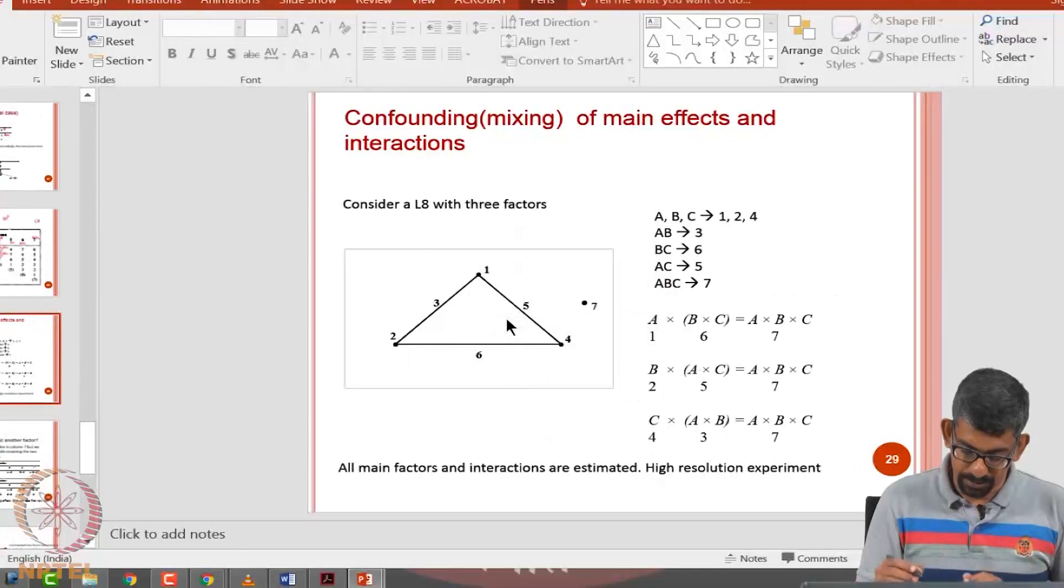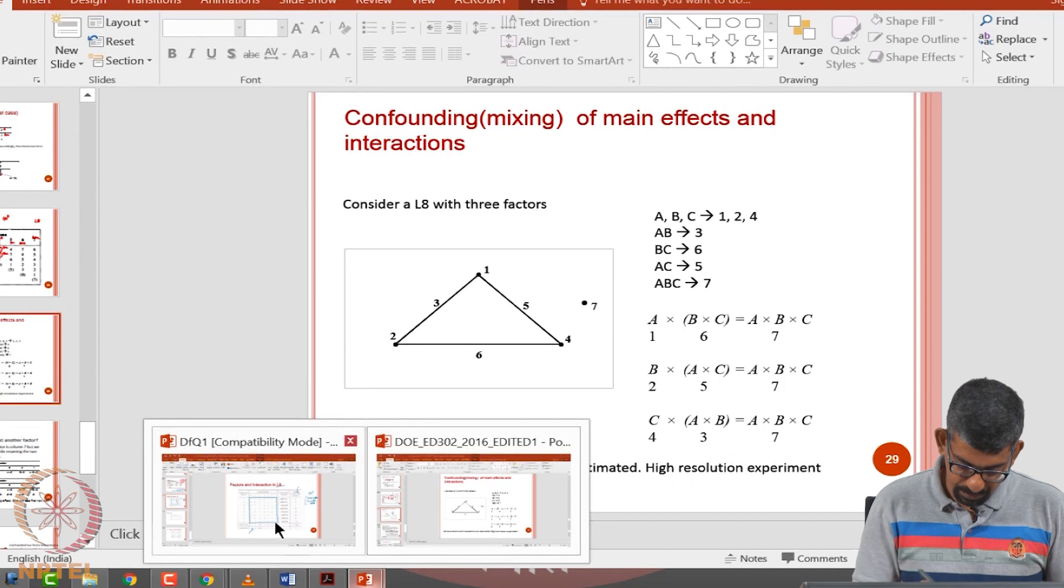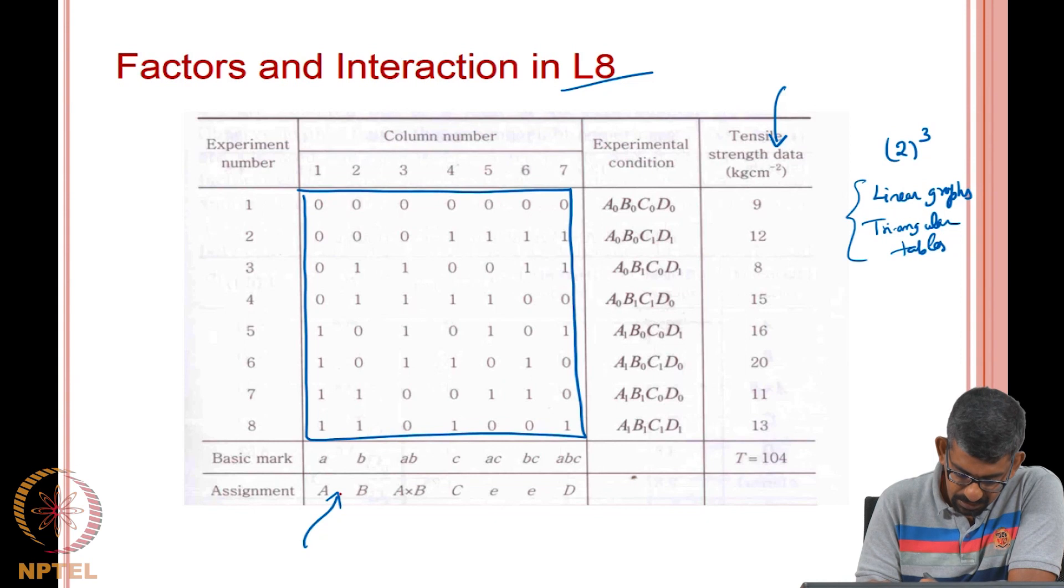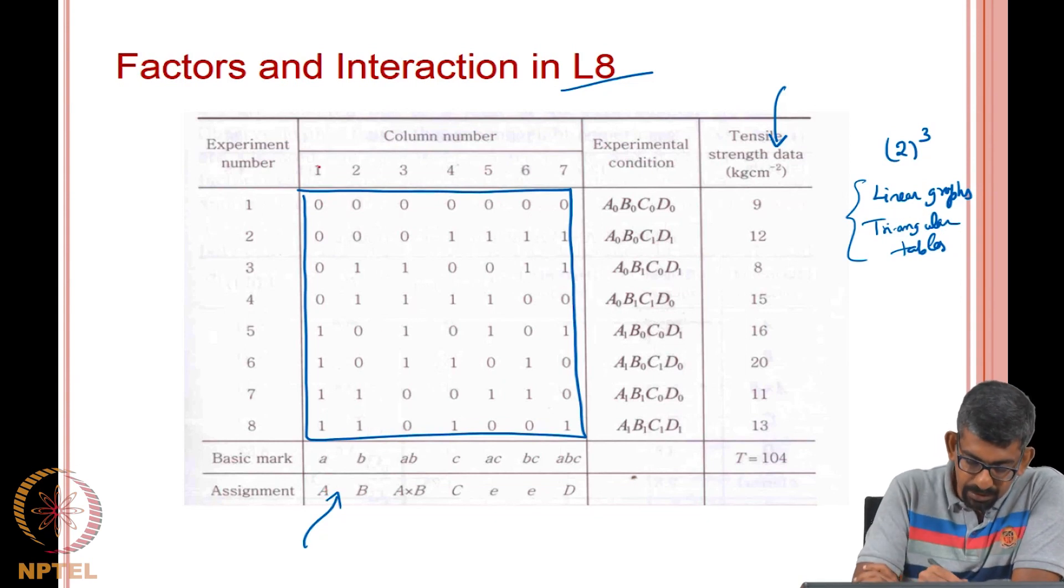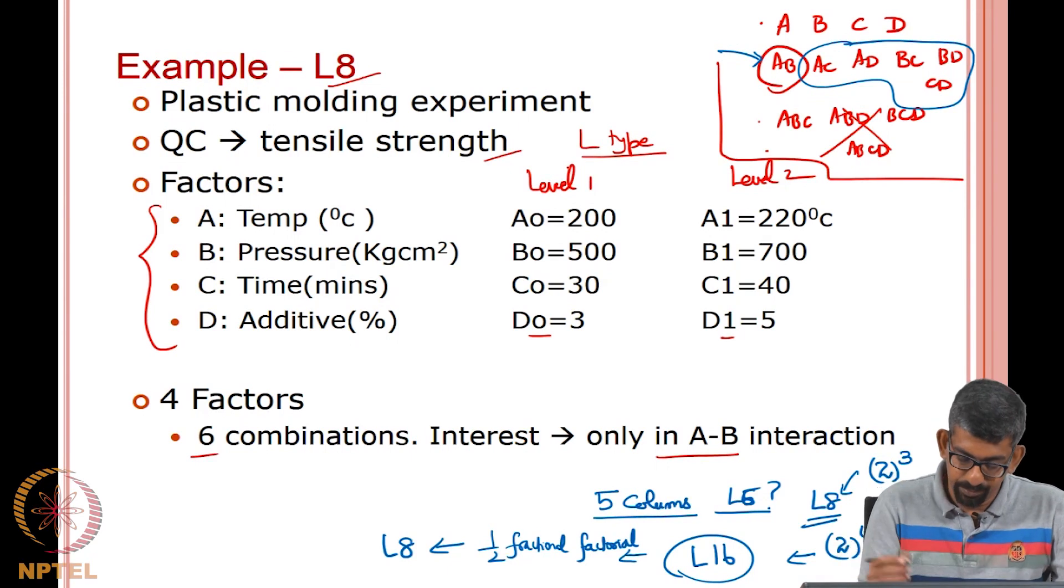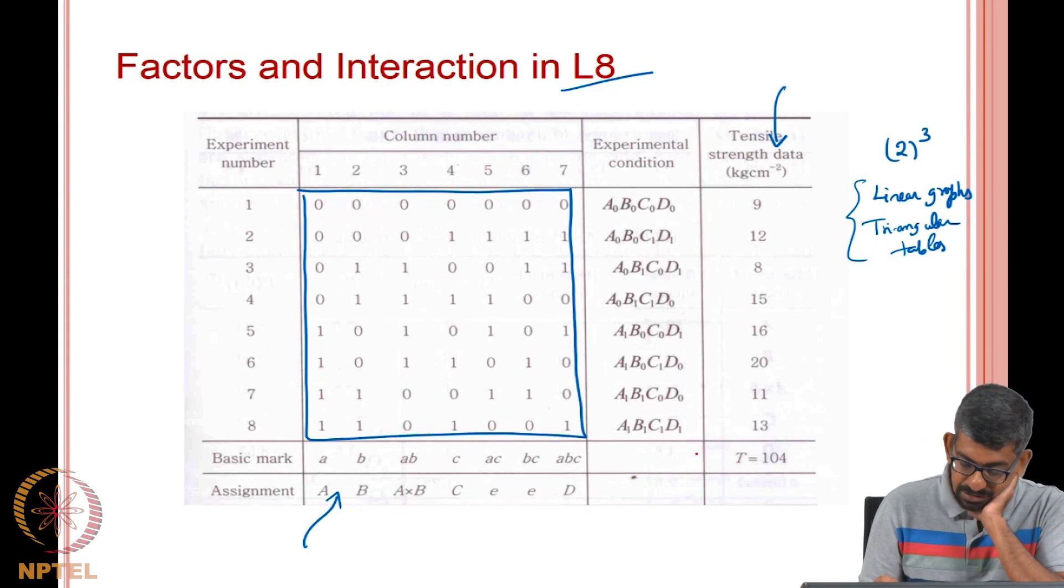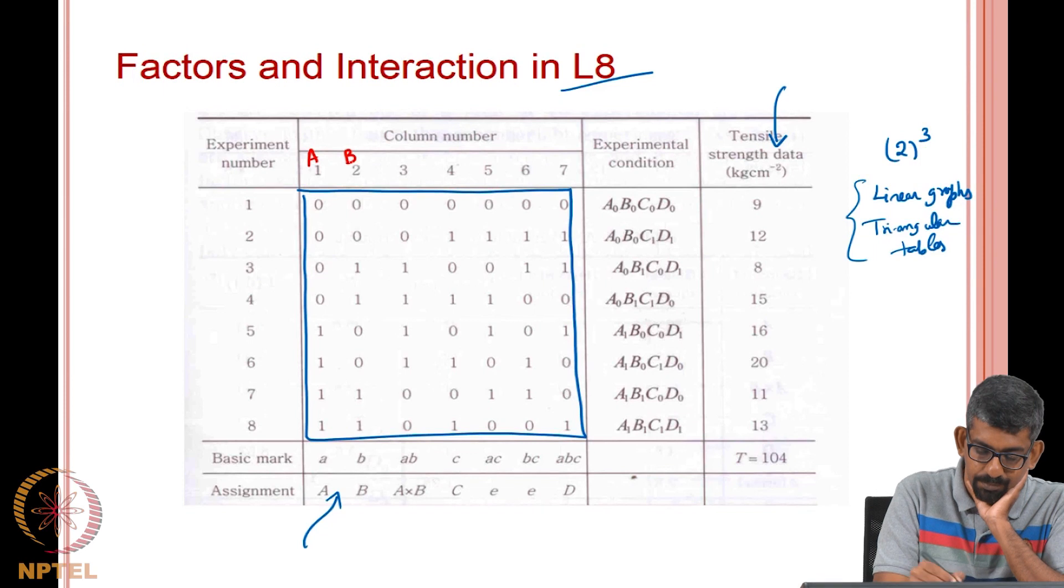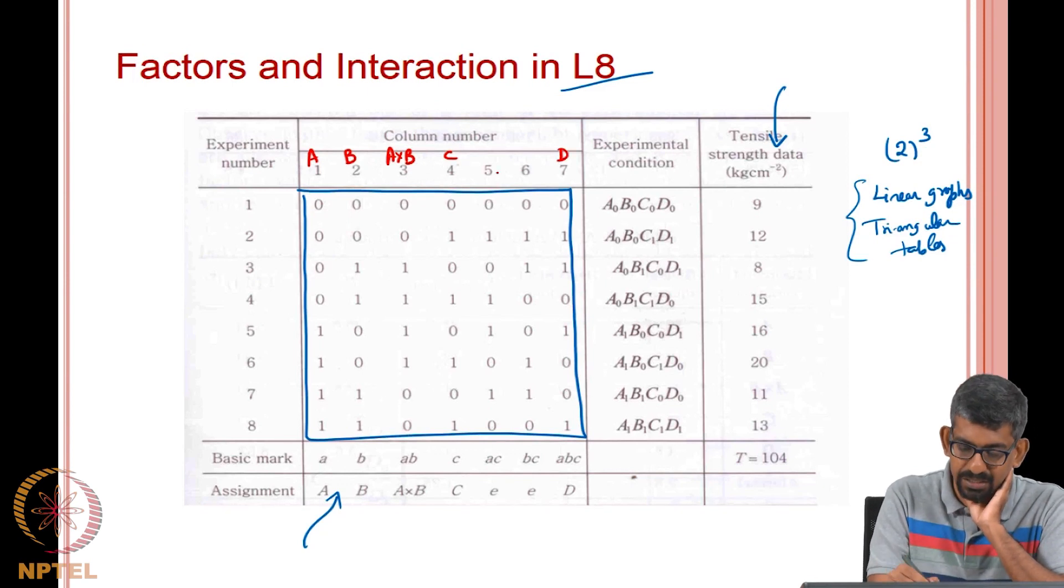So, let us go back to our previous example. The first step that you might want to understand is you want to allocate factors. We just saw how to allocate factors, but remember in this particular example, we are only interested in A cross B interactions. So, what they are saying I will take A in column 1, B in column 2, A cross B will be in column 3, then C, then D as per the linear graph.